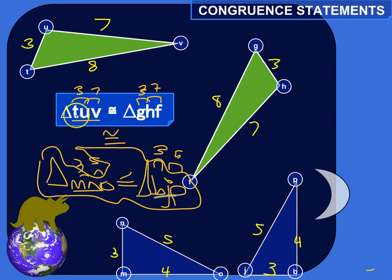So these congruent statements can actually convey a lot of information about the triangle. Not just that they're congruent, but it actually says which sides match up with which sides and which angles match up with which angles.